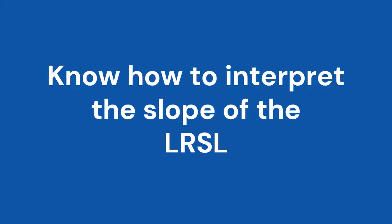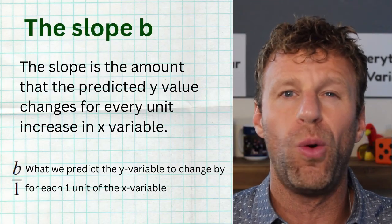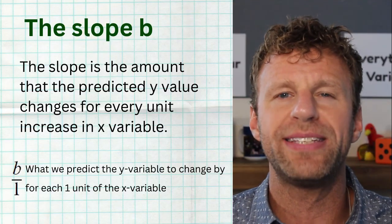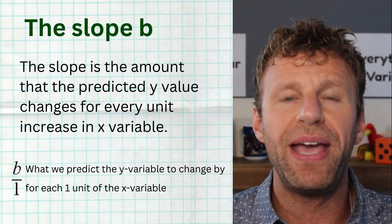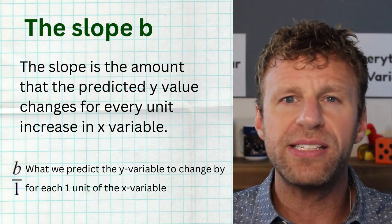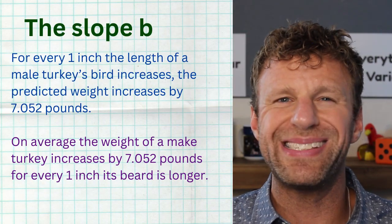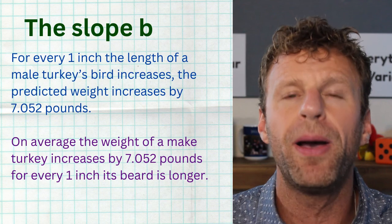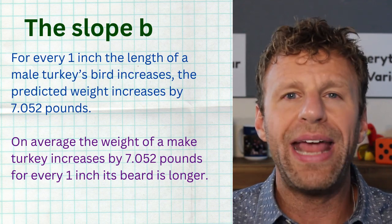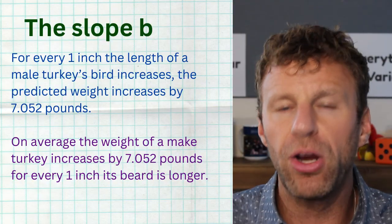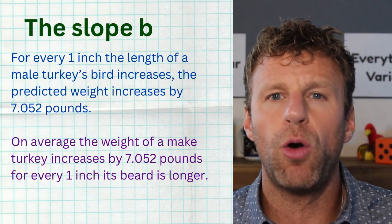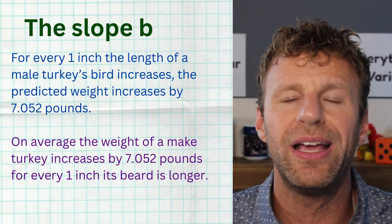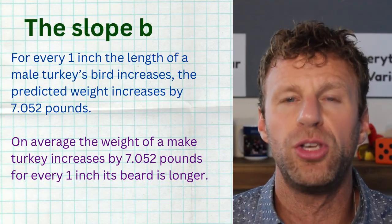Tip number six: know how to interpret the slope of a least squares regression line. This is worth at least one multiple choice question and possibly an FRQ on the AP exam. The slope is b. It tells you how much we predict the y variable to change based on a one-unit change in x. In our turkey problem, the slope is 7.052 — we predict the weight of a turkey to increase by 7.052 pounds for every one-inch increase in that turkey's beard length. You need to be able to write and interpret this.